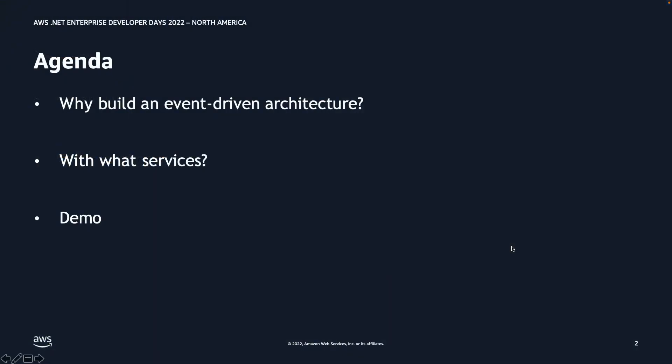Let's talk about the agenda for today's conversation. We're going to start with why we should look at event-driven architecture, covering the challenges with tight coupling of microservices. Then we'll discuss AWS services that can solve those challenges — specifically SQS, which is Simple Queuing Service, and SNS, Simple Notification Service. In the last part, we'll take a look at a hands-on demo.